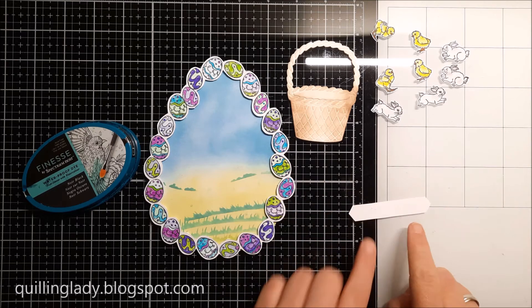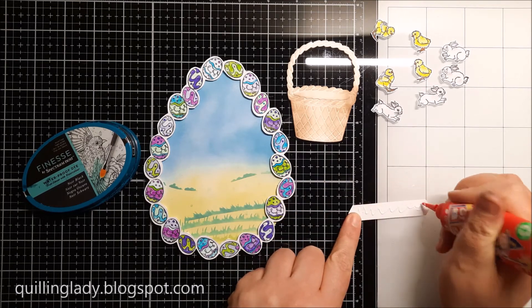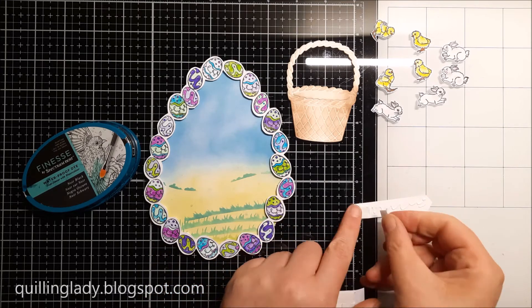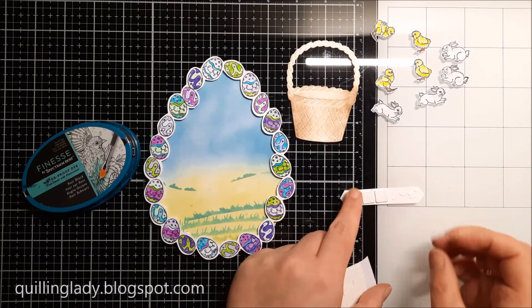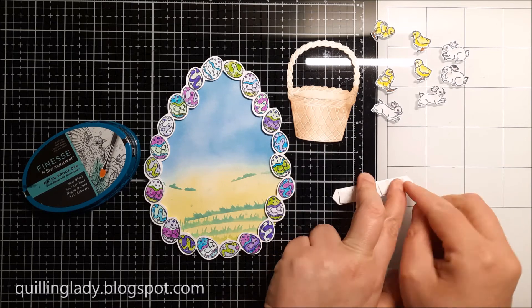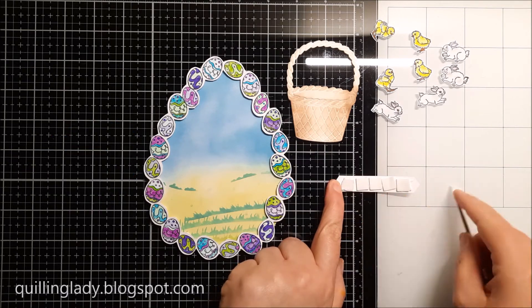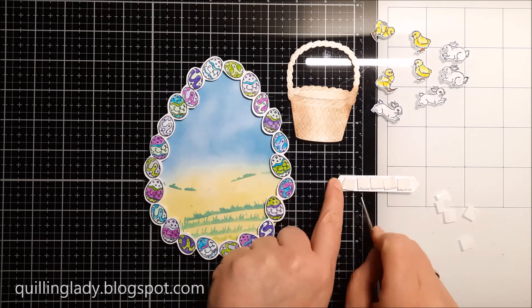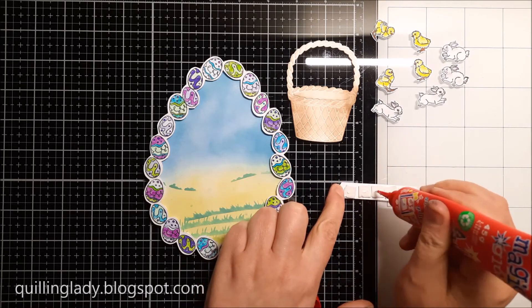To add a little bit of dimension, I'm going to use double-sided foam adhesive and this way it will be on the same level as the eggs and it will give my card a little bit more interest. Do you do that in your card making? Do you actually put some double-sided foam adhesive on some of the elements just to match them?